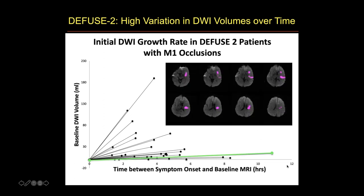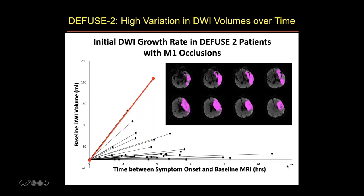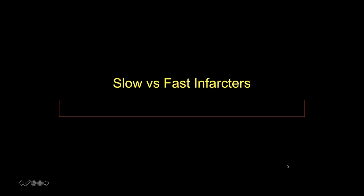One patient at 11 hours from symptom onset had a relatively low core infarct volume — a slowly growing MCA infarct. Another patient at just four hours had essentially infarcted the entire MCA territory. This variability led us to think of patients as either 'slow infarctors' or 'fast infarctors.'